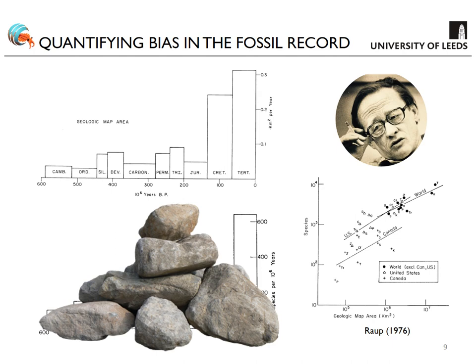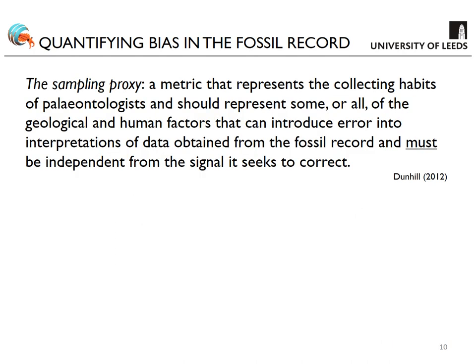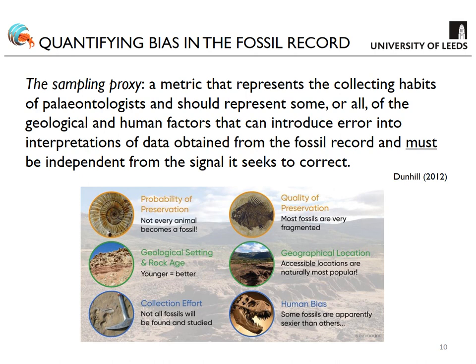Using map area and correlating it with species is using a sampling proxy. Map area is a sampling proxy — a metric that represents the collecting habits of palaeontologists and should represent some or all of the geological and human factors that can introduce error into data interpretations. Critically, it must be independent from the signal it seeks to correct — if two data sets that aren't independent are correlated, that should ring alarm bells. We want our sampling proxy to capture all of the biasing issues in our fossil data to be effective.